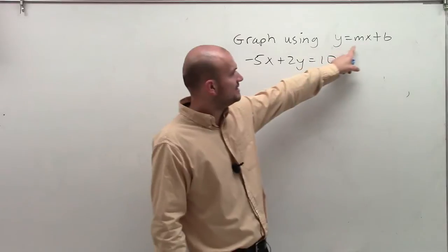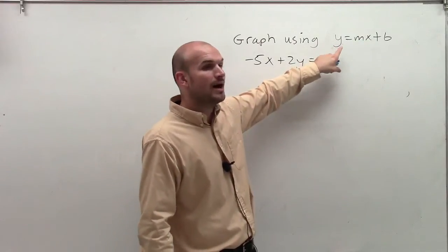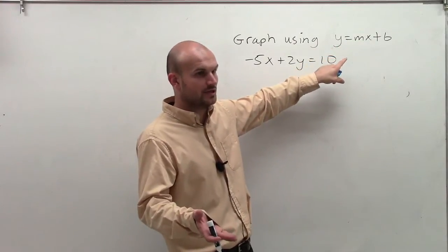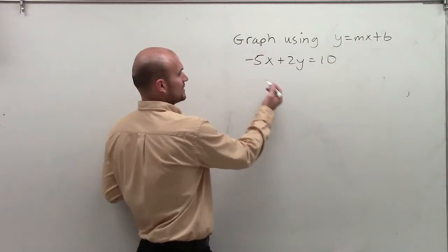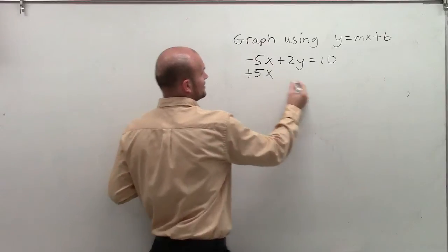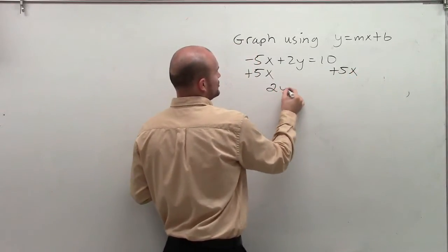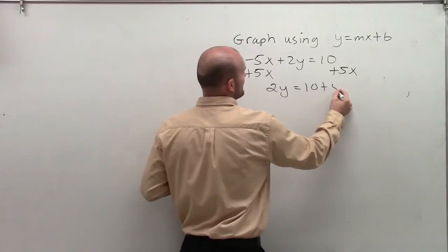Well, you can see this equation, I have 2y by itself. Remember when we did literal equations? We got the variable by itself. That's exactly what we're going to do here. We're going to add the 5x to the other side. So I have 2y equals 10 plus 5x.